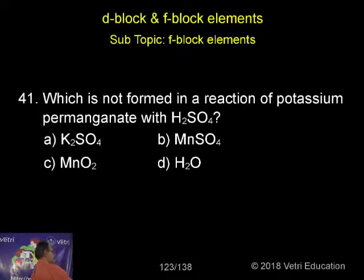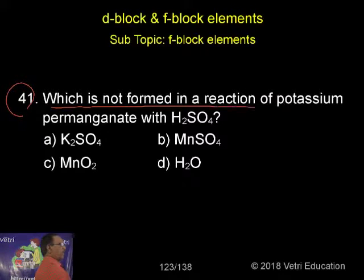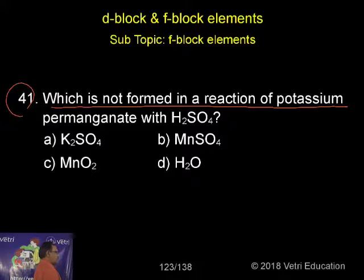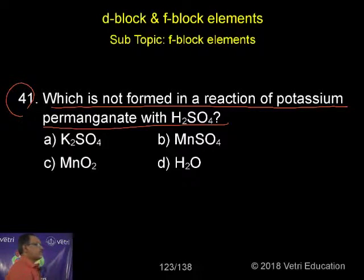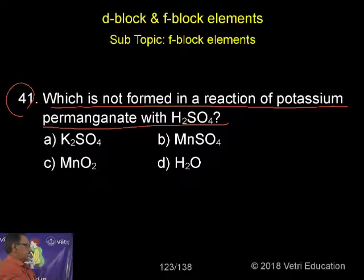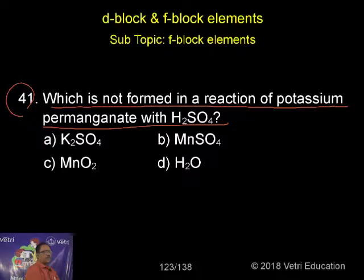Question number 41: which compound is NOT formed in a reaction of potassium permanganate with sulfuric acid? When you treat potassium permanganate with sulfuric acid, what is the compound not formed?